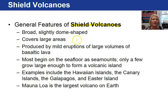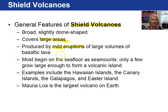Shield volcanoes are typical of volcanic islands such as the Hawaiian Islands. They are broad and slightly domed in shape. Due to the fluid, non-viscous nature of the magma, they do not have steep slopes. They produce mild eruptions and cover large areas because of the non-viscous nature of the lava. Examples include the Hawaiian Islands, the Canary Islands,